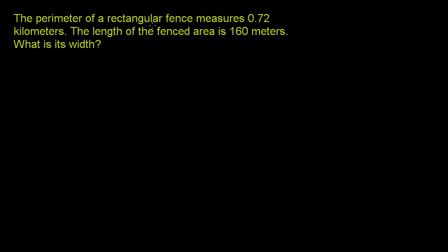The perimeter of a rectangular fence measures 0.72 kilometers. The length of the fenced area is 160 meters. What is its width?